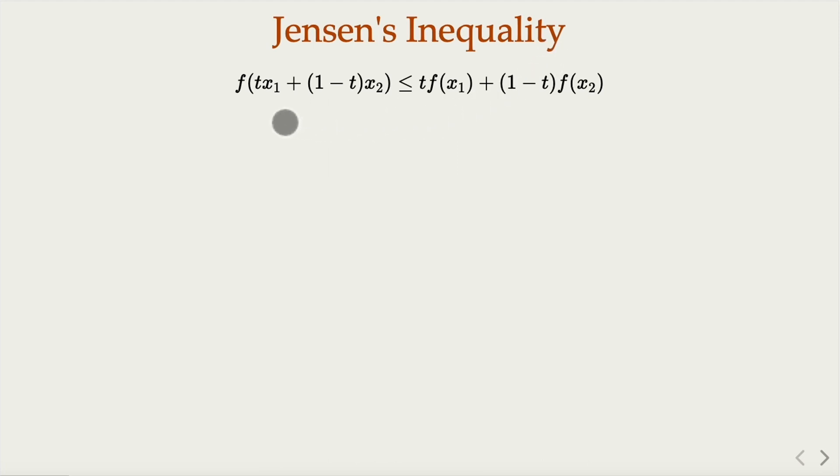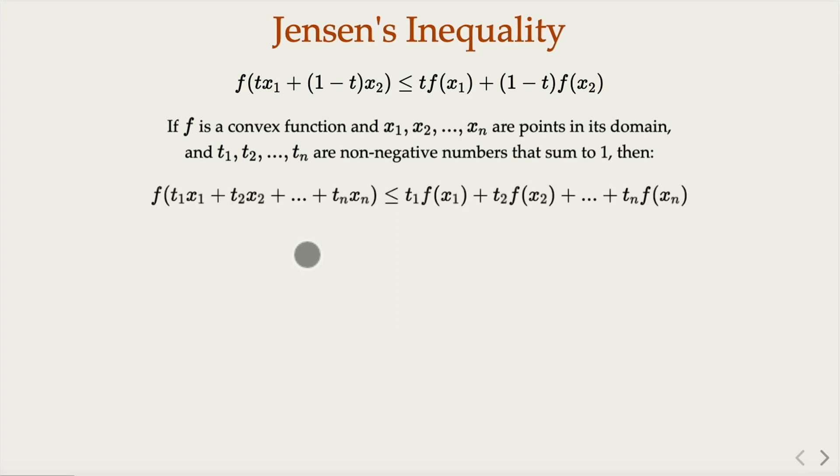Back to Jensen's inequality. As we notice, this inequality is used in the definition of the convex function here. And of course, there is an extended property. That is, if you have n points, and if you have coefficient t1 to tn here, that will be non-negative numbers that add up to 1. That is, we're going to have weighted average on those n points here. Then the function value at that weighted average point is going to be less or equal to the weighted average with the same coefficient of the original function values. So this, in general, is called Jensen's inequality.